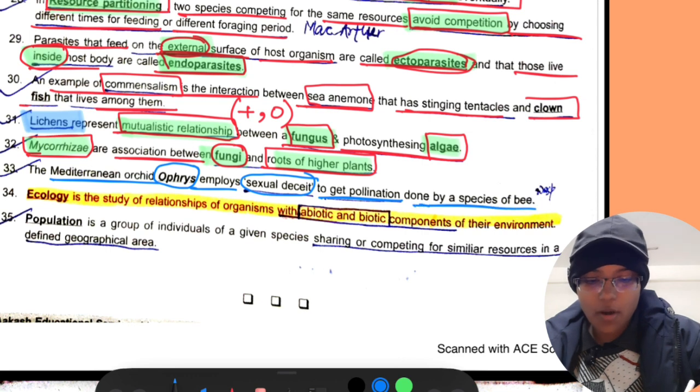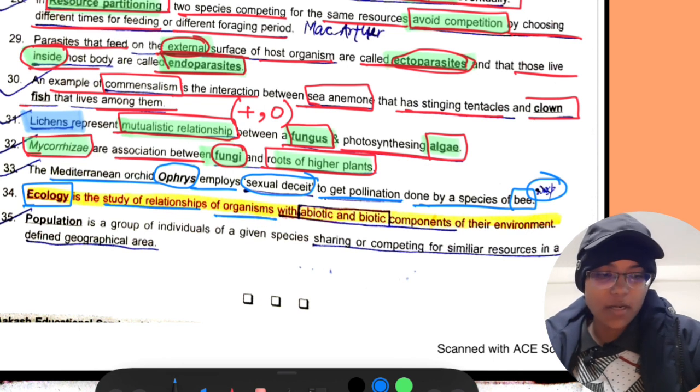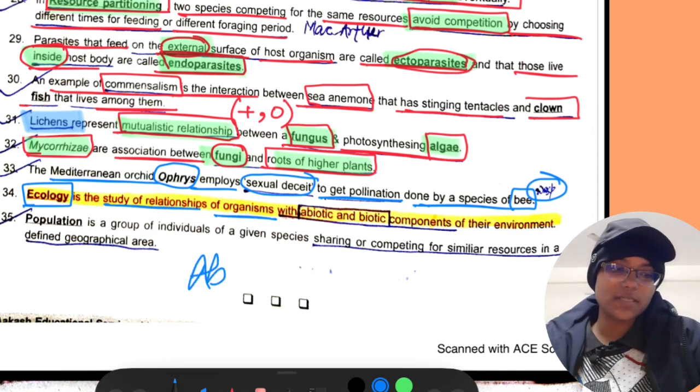The Mediterranean orchid Ophrys employs sexual deceit to get pollination done by a species of bee.